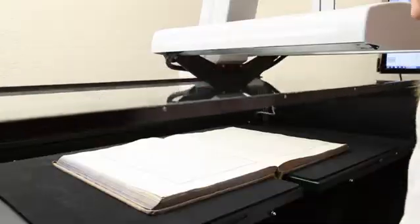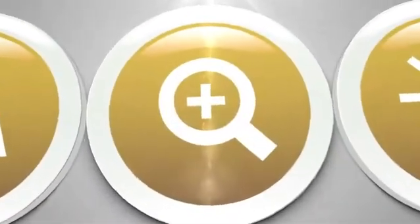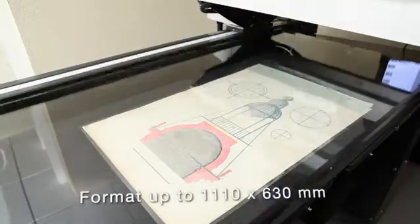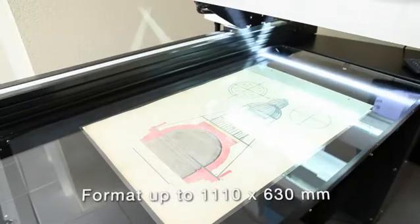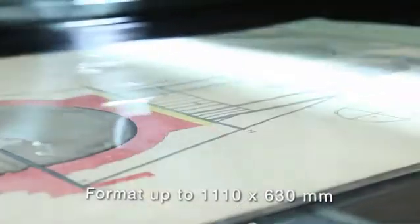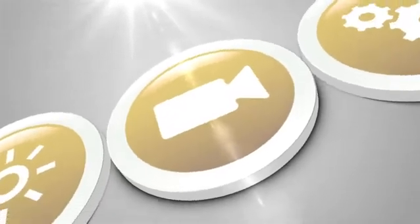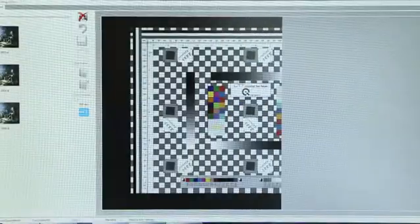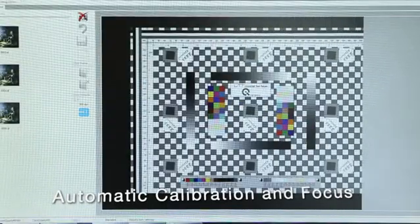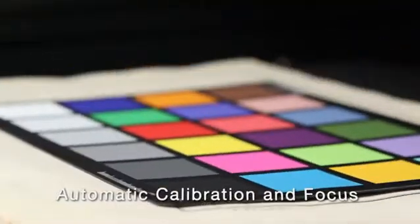It offers automatic glass pressure control and adjustment for optimal respect of documents. The new SupraScan Korts A1 offers the largest scanning size on the A1 scanner market. The scanner also boasts a whole host of smart features such as automatic calibration and automatic focus.